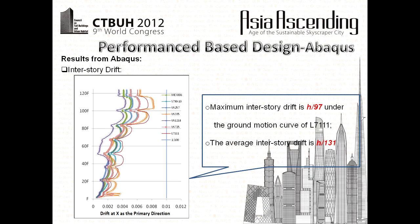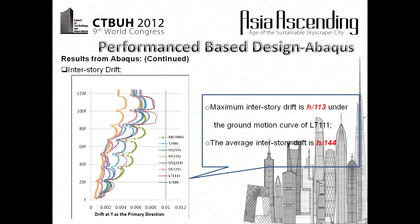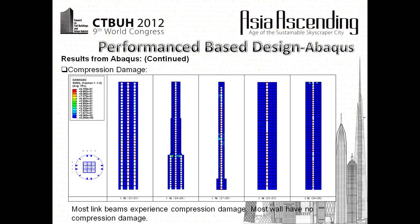Comparing results from ABACUS software with Perform 3D, there is no significant difference. The maximum interstory drift is 1/97 under ground motion record 07-triple-1, and the average interstory drift is 1/131. Under compression, most coupling beams experience compression damage but most walls have no compression damage. Red-colored areas indicate very high strain levels; however, in some coupling beams severe damage is also observed.